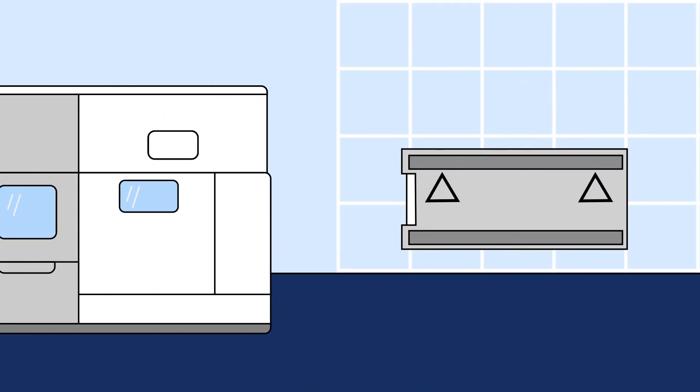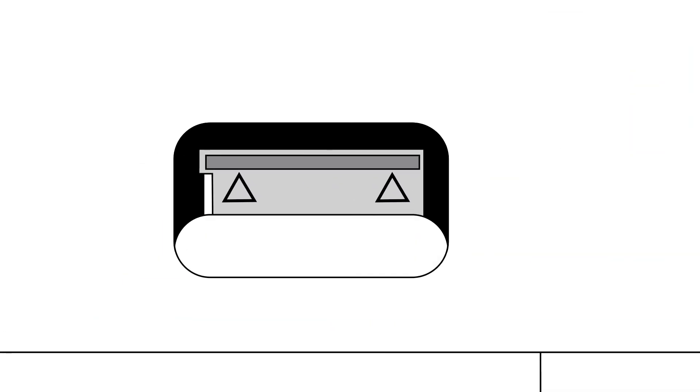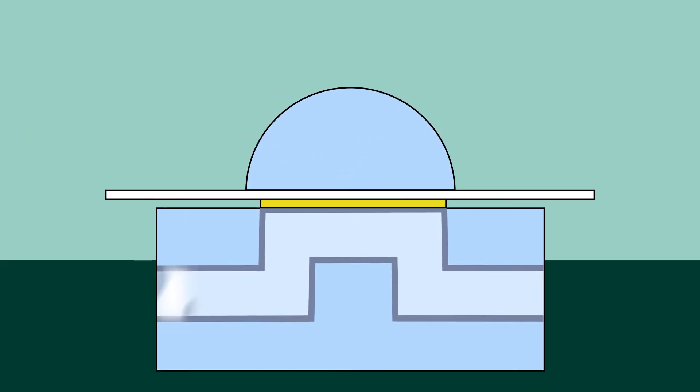The sensor chip is docked into the Biacore instrument and the microfluidic system is primed with buffer. Next, the ligand is injected and attached to the sensor chip using a capture-based or covalent coupling approach. During analysis, the other binding partner, the analyte, is injected from a microplate or a vial. The microfluidic system delivers it free in solution over the sensor chip surface.